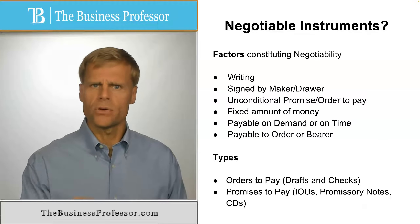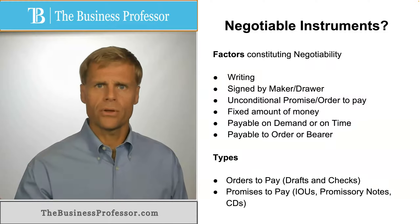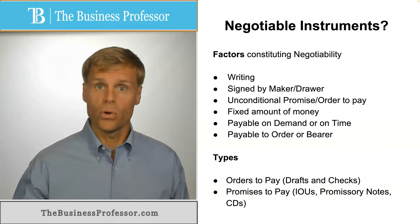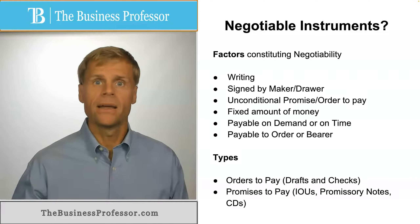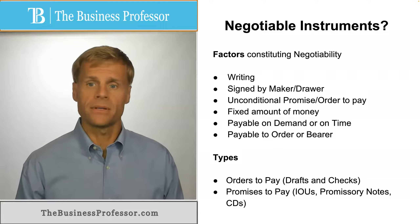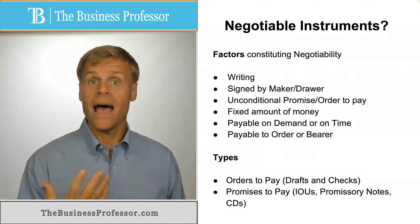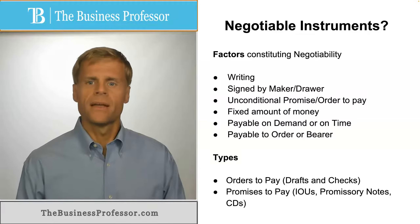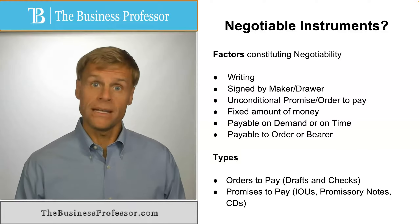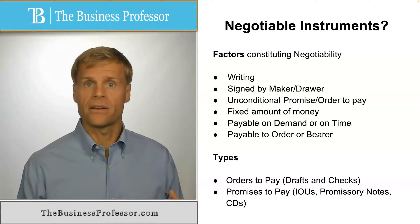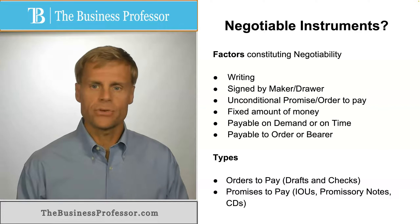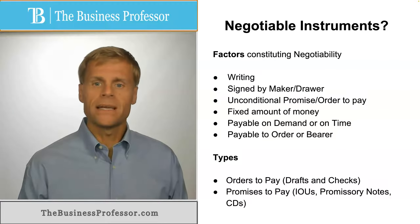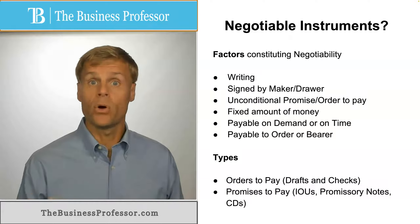So an unconditional order for a third party to pay — such as where I hold a banking account or somebody who holds my money — I'm ordering them to make a payment of this amount, or a promise that I in the future will make a payment. There must also be a fixed amount of money, meaning an identified amount of currency within the instrument, and the instrument must be payable on demand or payable on time.